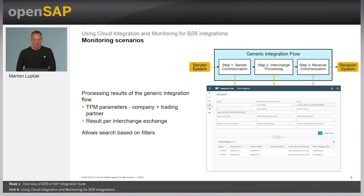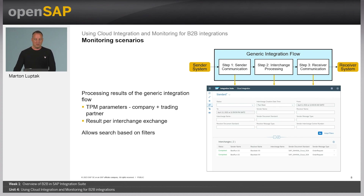The data can be easily drilled down and filtered. Filter options in this view include: processing status, message types, sender and receiver information. You can also navigate to a detailed view in the lower part where you see the details of a single interchange.